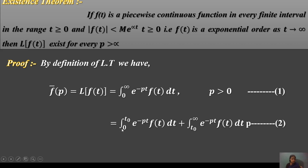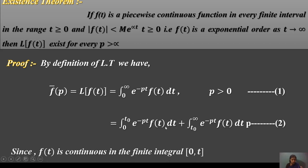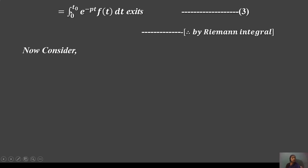We split the integration into two parts. Since f(t) is continuous on the finite interval [0, t₀], the integral from 0 to t₀ of e^(−pt) f(t) dt exists. This is equation 3, and is called the Riemann integral.